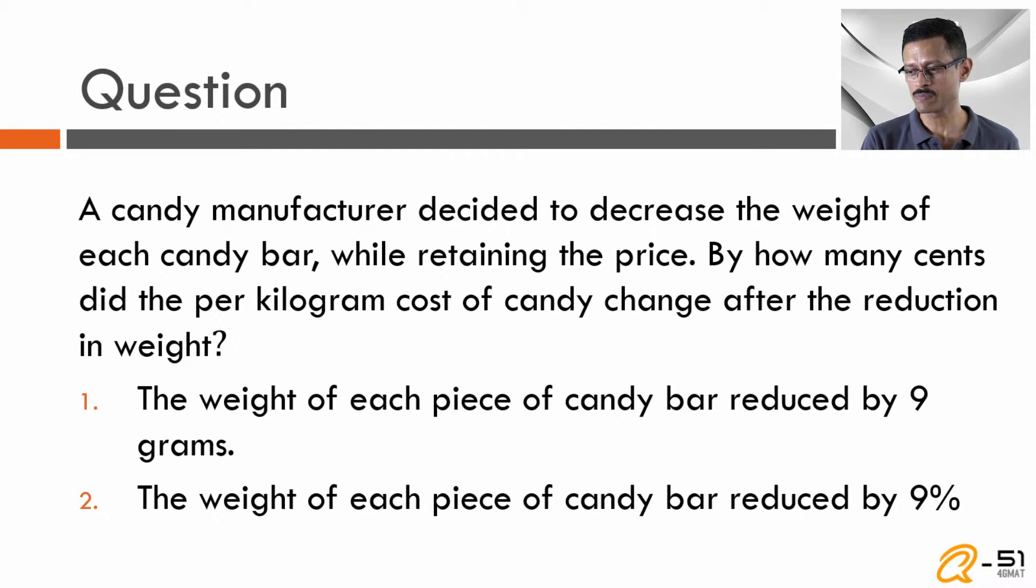Two statements follow. Statement one: the weight of each piece of candy reduced by nine grams. They've given you the absolute decrease in weight per candy. Statement two gives the same information in terms of a percentage—the weight of each piece of candy bar reduced by nine percent.